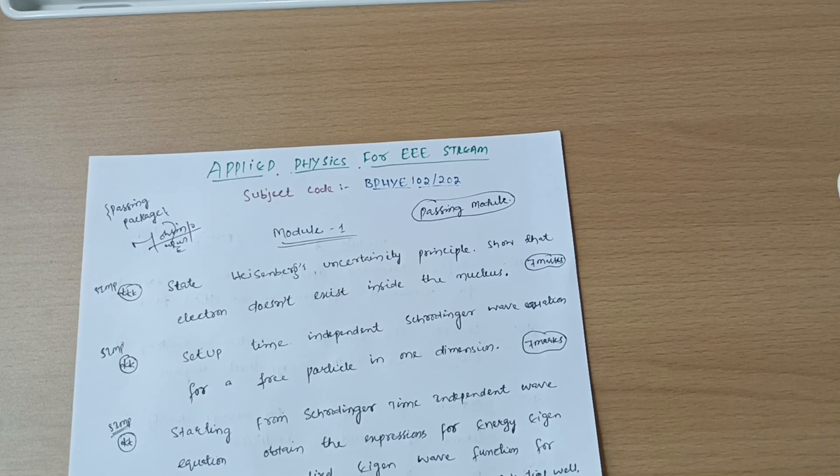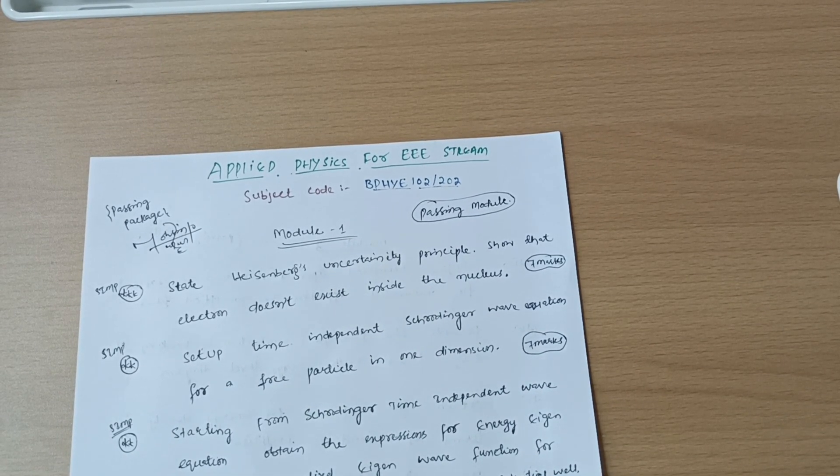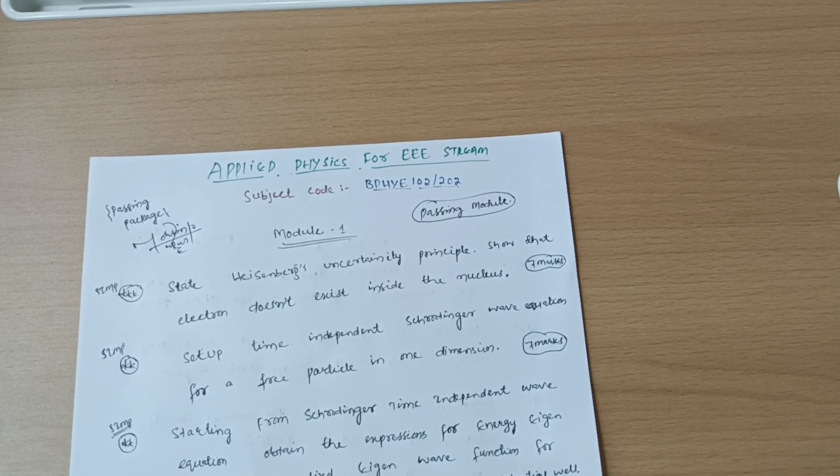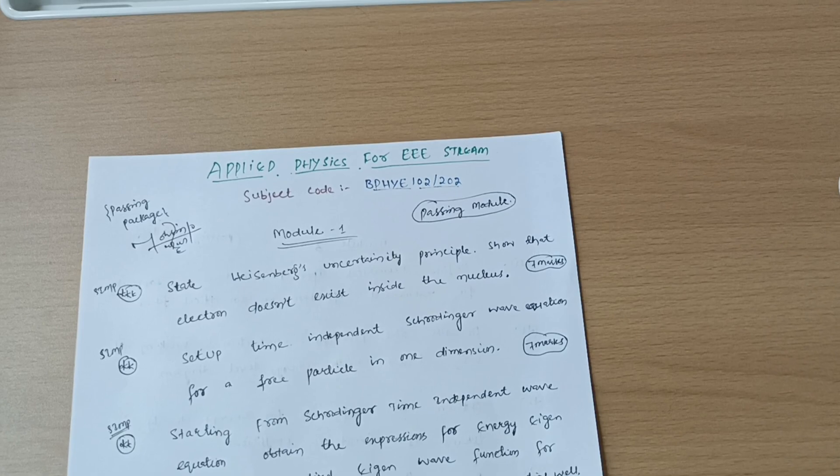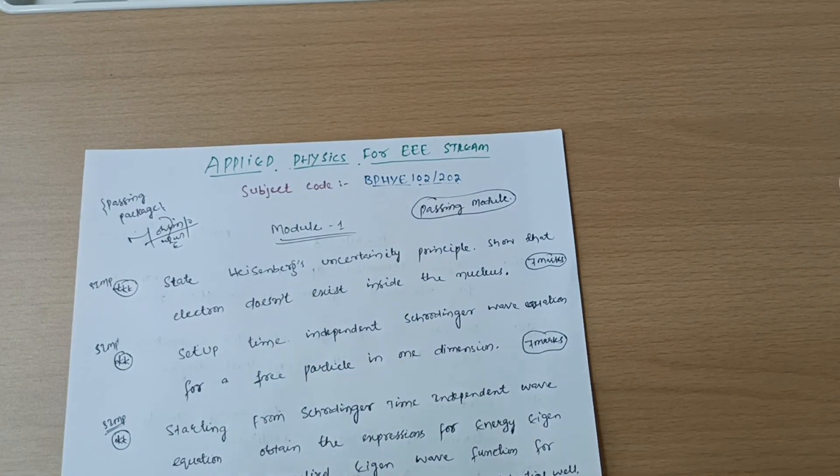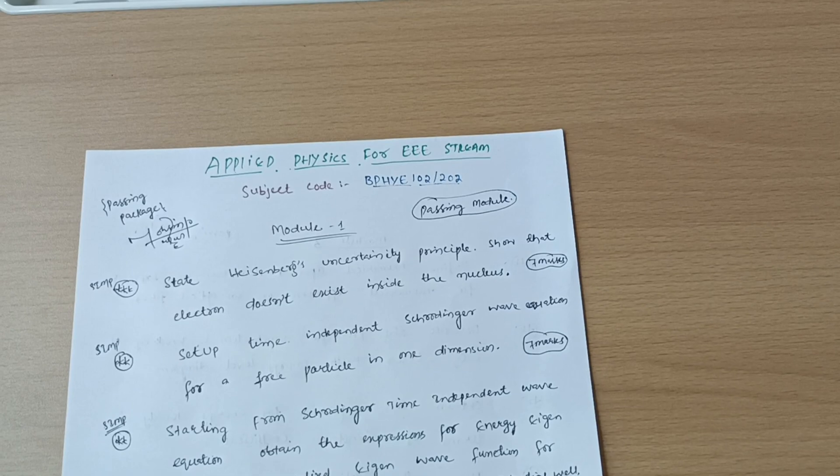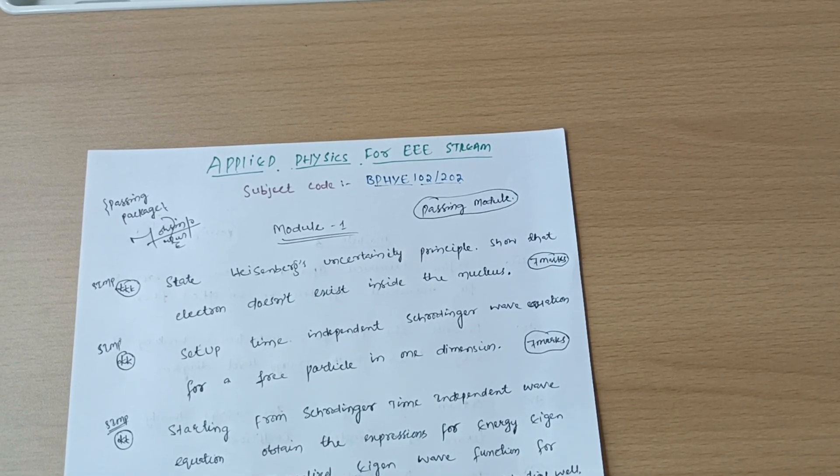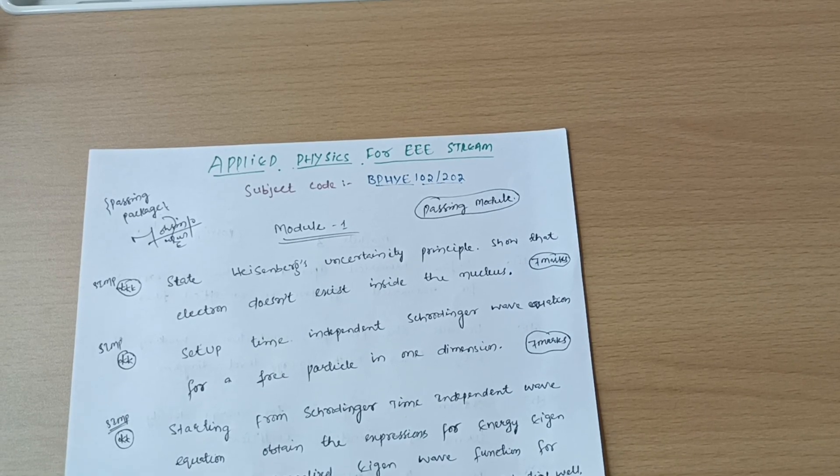Let me discuss here the passing strategy for the physics subject. Let me tell you one thing, physics is a subject which can be passed only by theoretical portion if you leave the numerical part. But my suggestion to you guys is go through numericals also which are very easier ones. If I consider the first module and third module, likewise laser module, those numericals are very easier ones.